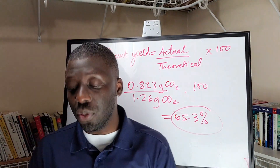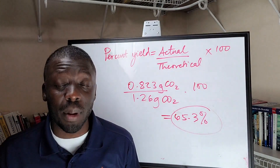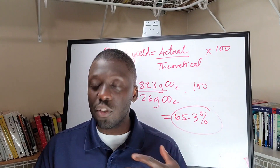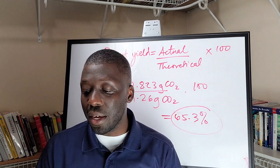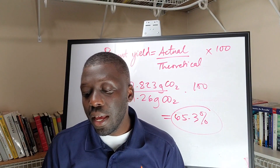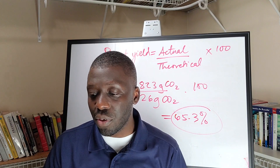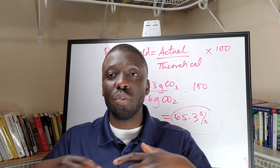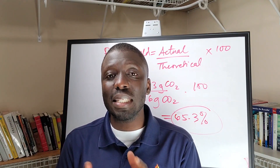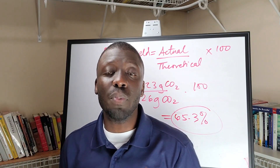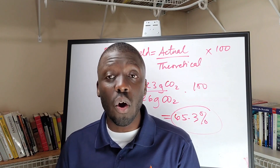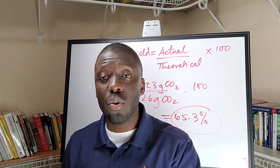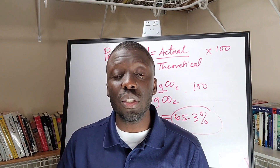Our percent yield came out to about 65.3%. Why are we getting only about 65%? There could have been a leak from the balloon, you could have spilled some baking soda after weighing it, the circumference could have been hard to measure precisely, or baking soda got in before sealing the flask. These are some reasons for a low percent yield. I hope this has helped you understand how to work with percent yield and the ideal gas law. Let me know if you have any questions, and I'll make a video for the next lab. Thanks for watching and have a wonderful day.